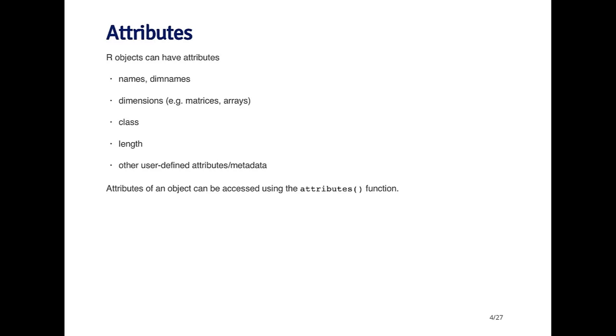Dimensions - a matrix will have dimensions, for example, a number of rows and a number of columns. If you have a multi-dimensional array, you'll have more than two dimensions. The class of the object - every object will have a class. For example, numeric objects have class numeric, and integer objects have class integer.